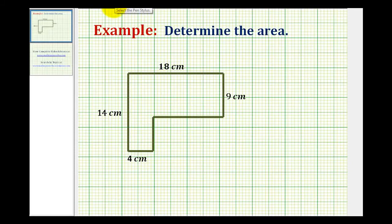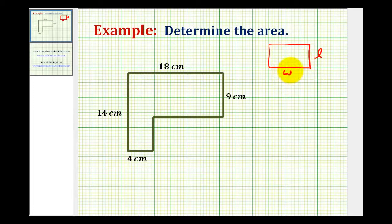We want to determine the area of the given L-shaped polygon. To do this we'll be using the area formula for a rectangle, where if this is our rectangle and we call this the length and this the width, the area would be equal to length times width. So what we'll do is divide this into two rectangles and then find the sum of the two areas.